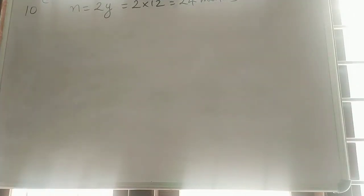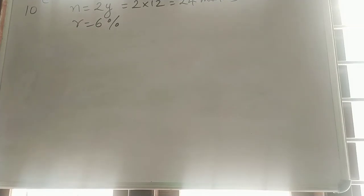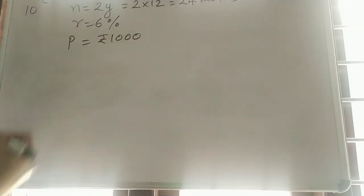Next, the bank pays interest at a rate of 6% per annum. So, R is equal to 6% and the monthly installment is Rs. 1000. So, the monthly installment P is equal to Rs. 1000.